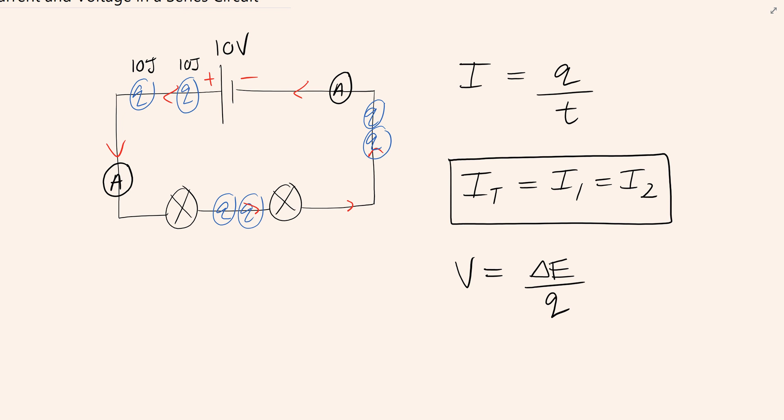Now as they move around the circuit, they're going to encounter these resistors, these lamps. And as a result, they're going to have to give up some of their energy to those lamps.